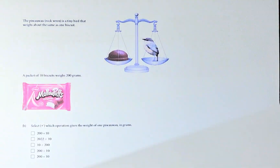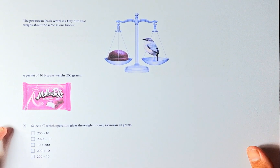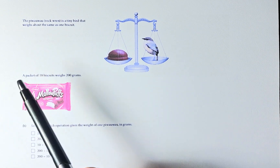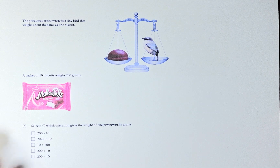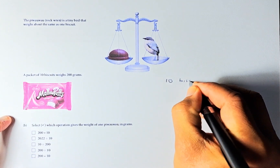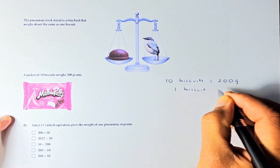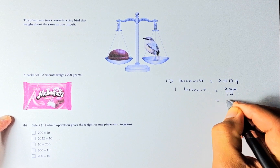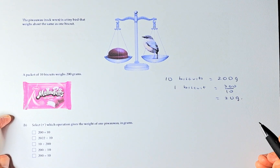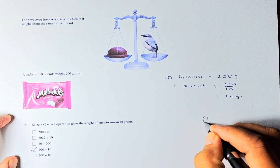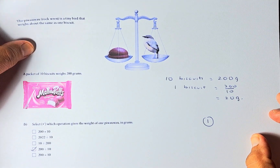Now we shall look at question 2B. The question reads: the Piawau or Rock Wren is a tiny bird that weighs about the same as 1 biscuit. A pack of 10 biscuits weighs 200 grams. So we need to find how much 1 biscuit weighs. If 10 biscuits weigh 200 grams, then 1 biscuit is 200 over 10, which gives us 20 grams. Because the question gives multiple choice, we select 200 divided by 10, and that will give you another outcome 1.